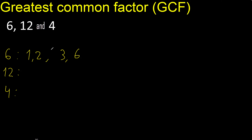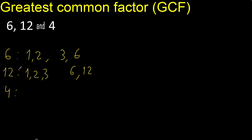Factors of 12. Divided by 1 is 12. Divided by 2 is 6. Divided by 3 is 4. Next, 4 is here.